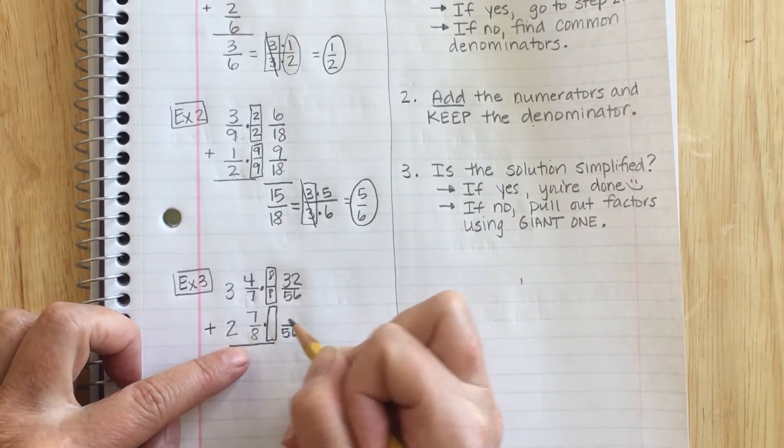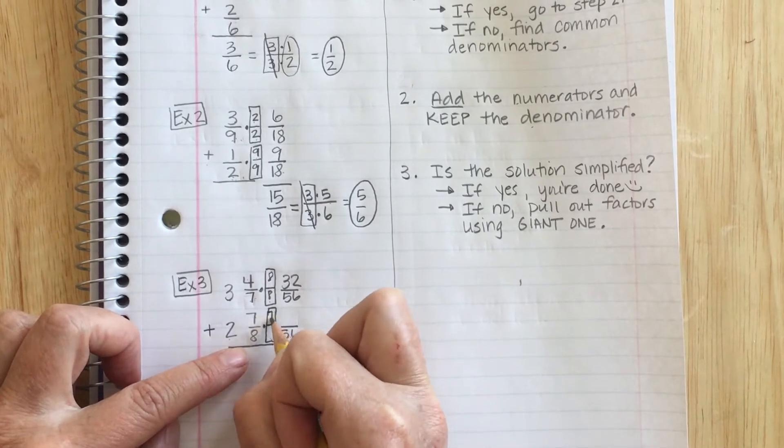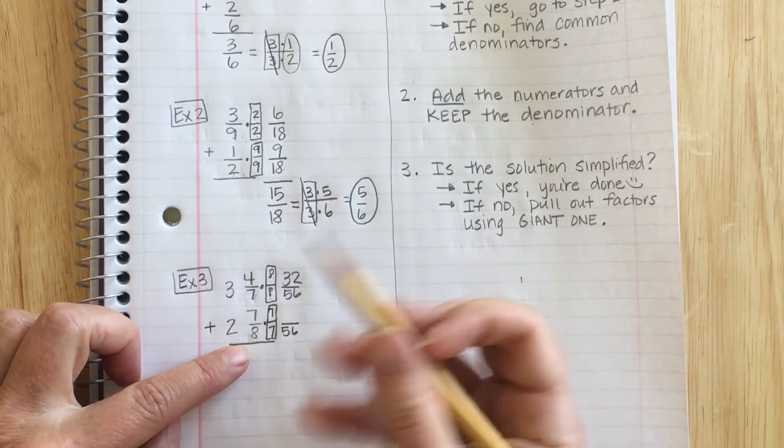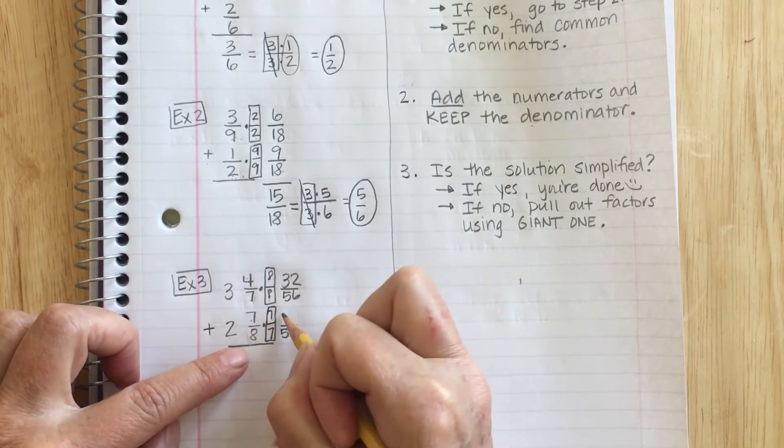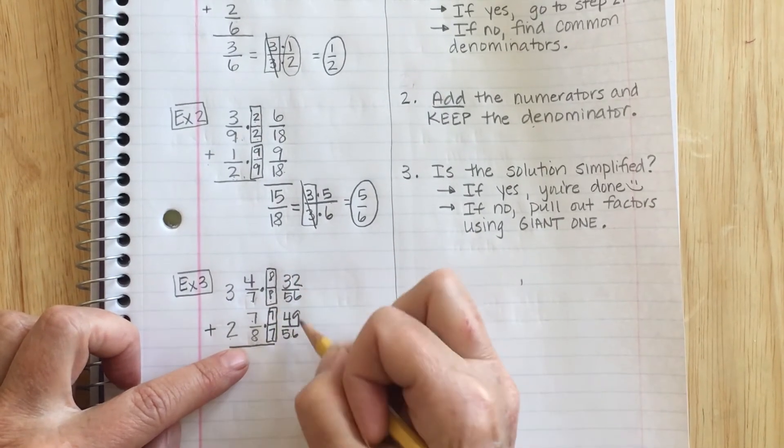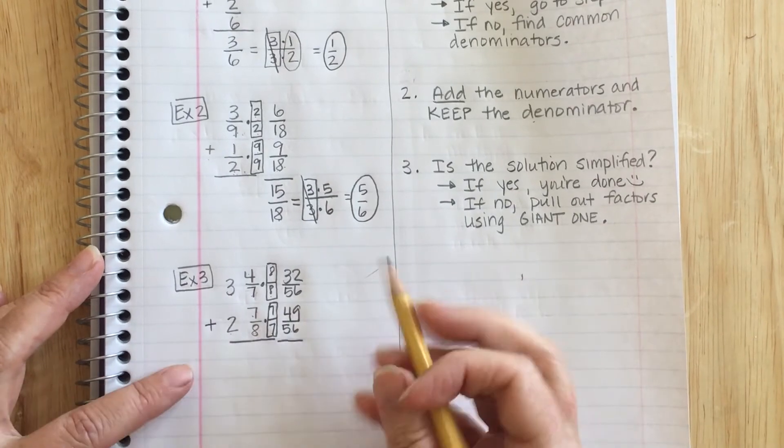If you need to use your multiplication chart, go ahead and do so. So that means this needs to be 7/7. So 7 times 7 is 49. I've got some big numbers here. So if I need to do some adding on the side, I will.